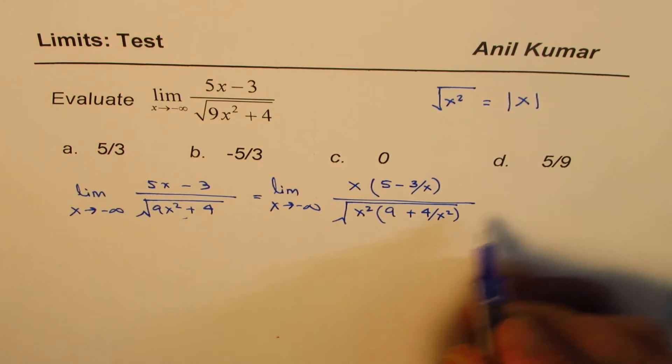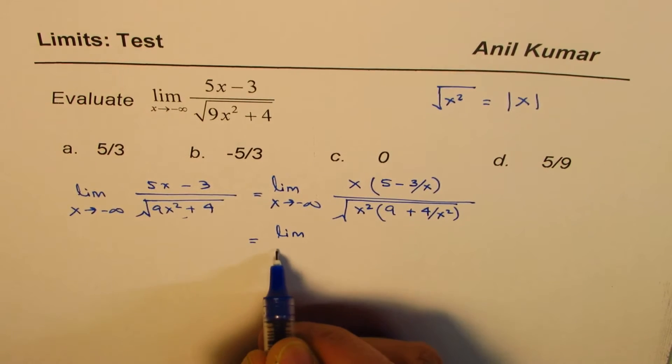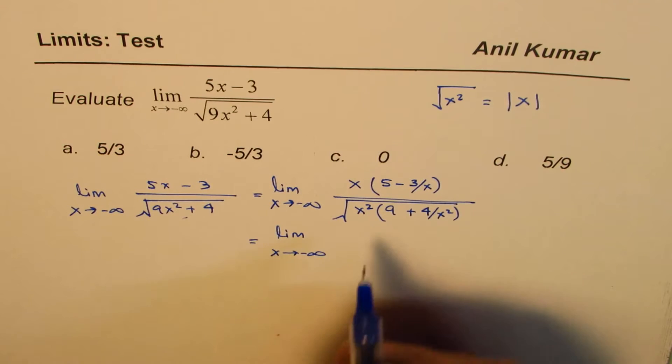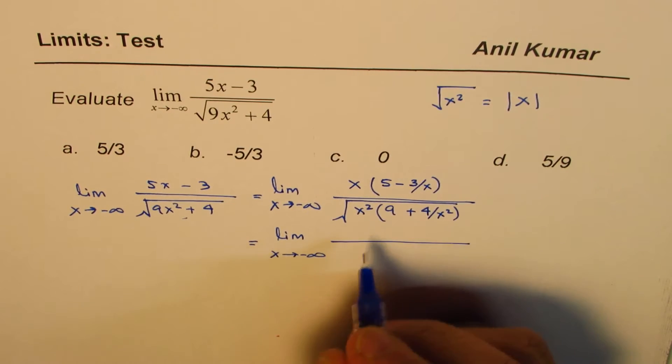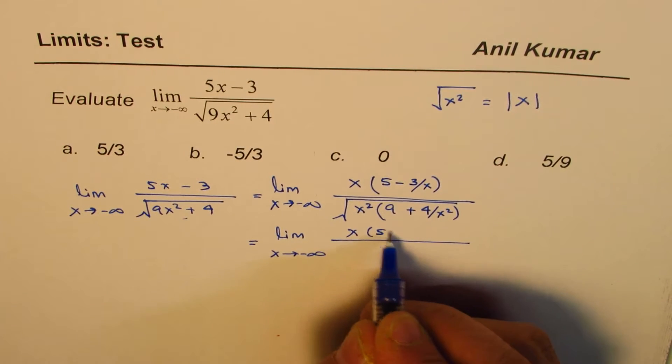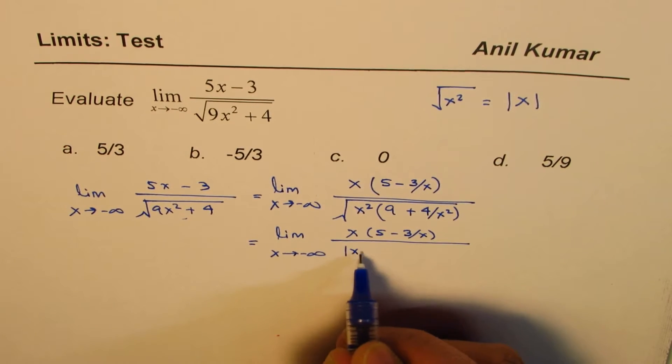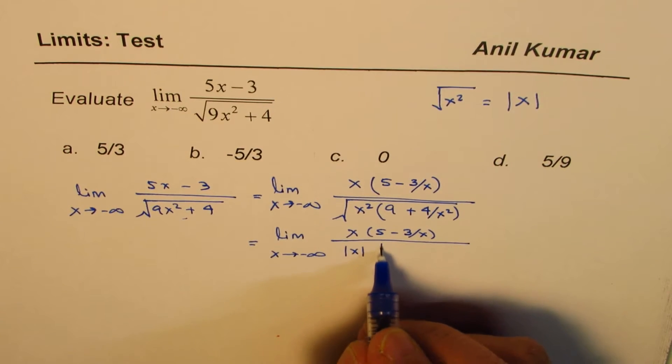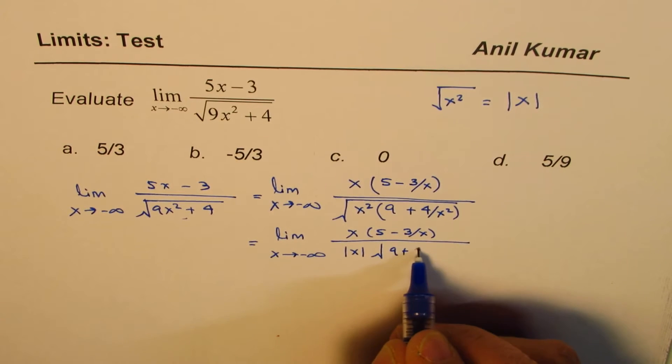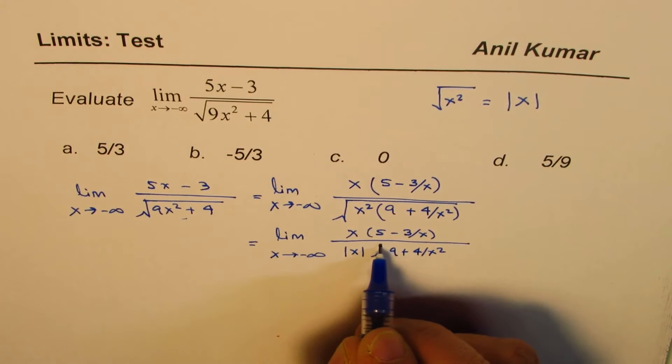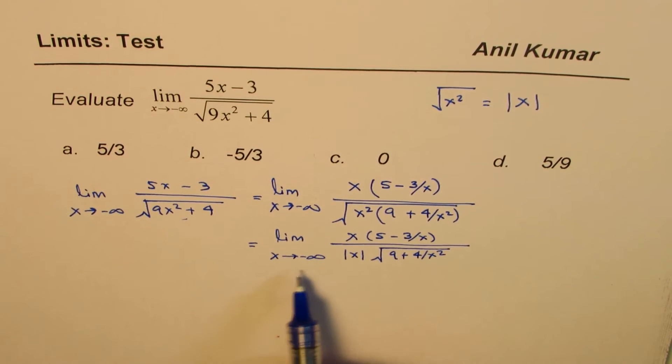So we could write this as equal to limit x approaches minus infinity. The numerator is x times 5 minus 3 over x. And the denominator is absolute value of x. And within square root, we have 9 plus 4 over x square.